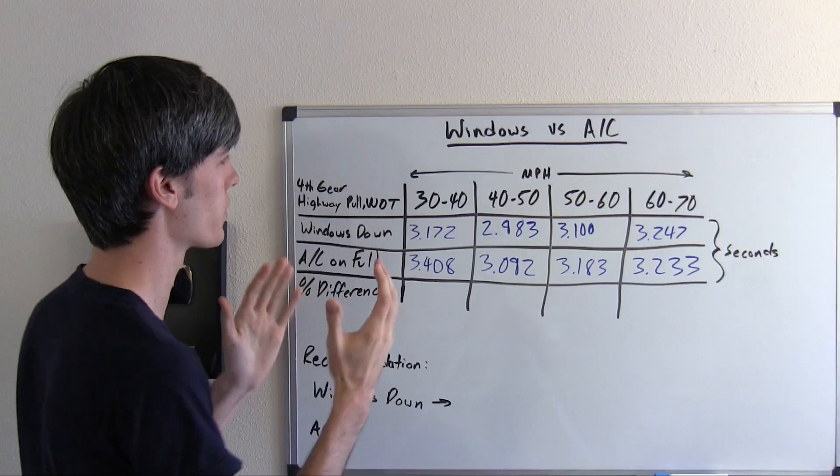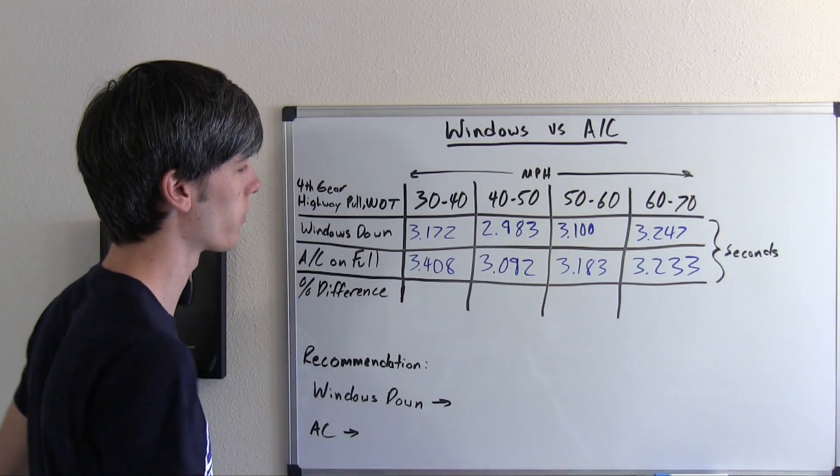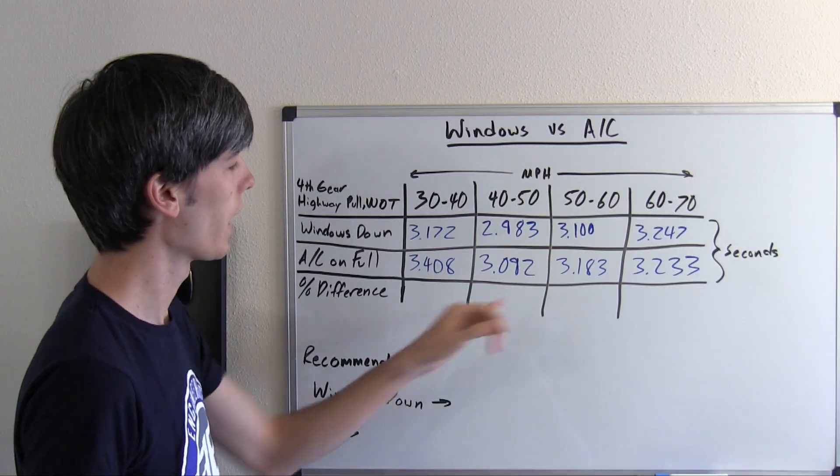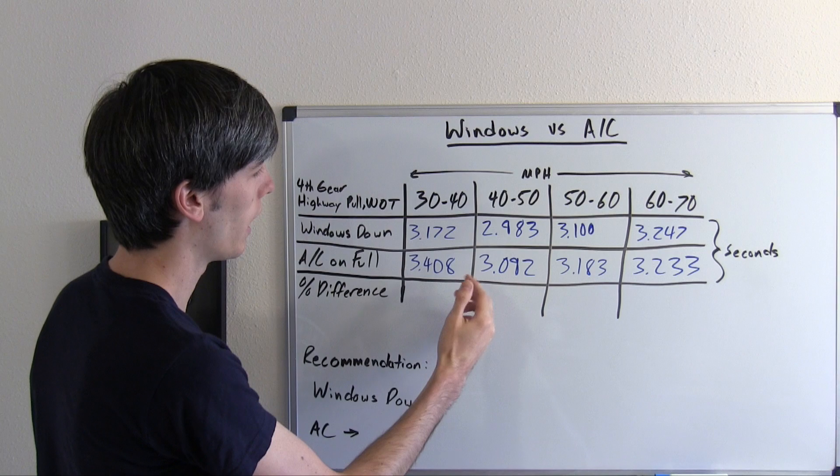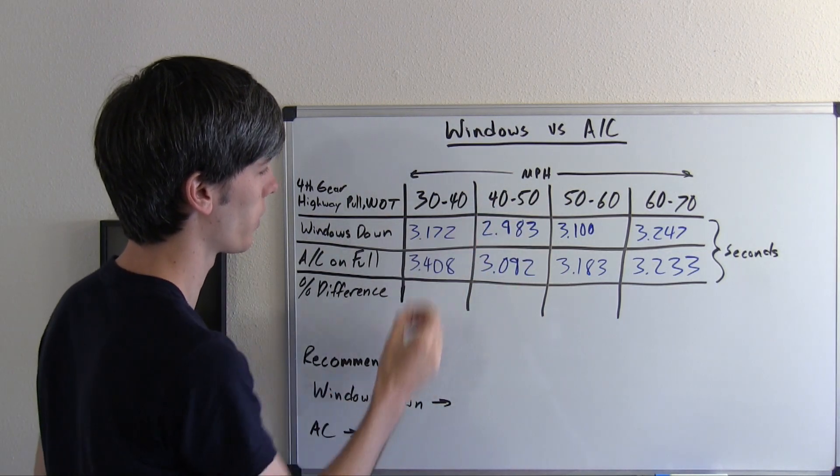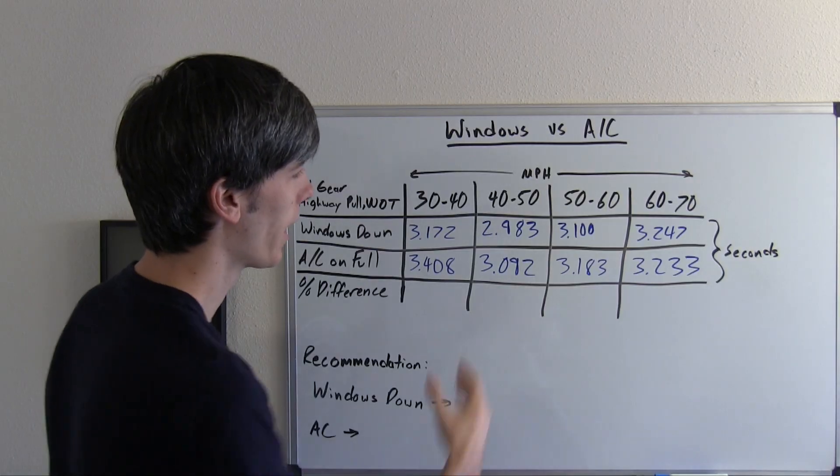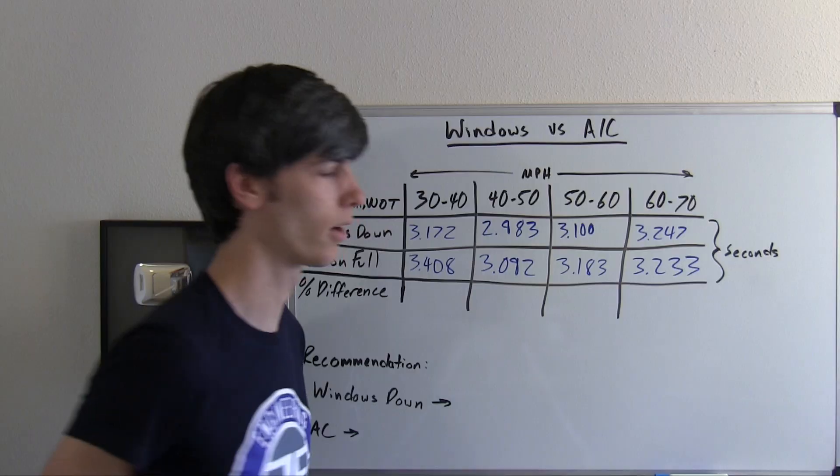Let's check out the averages for the different time intervals. From 30 to 40 miles per hour, 3.408. 3.092 from 40 to 50. As you can see, the same trend where as you increase in power with the higher RPMs when you're going from 40 to 50 in fourth gear versus 30 to 40, it takes less time. And then drag starts to become a factor from 50 to 70 miles per hour and the times get slower.